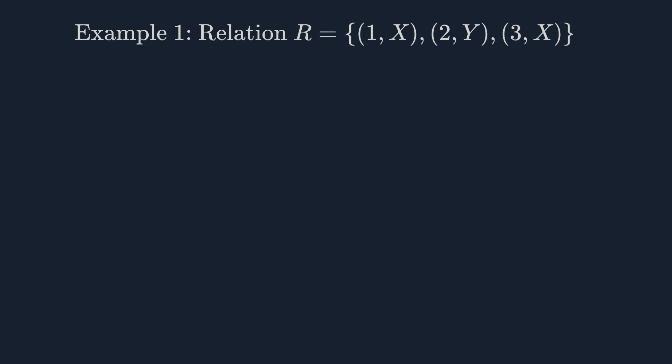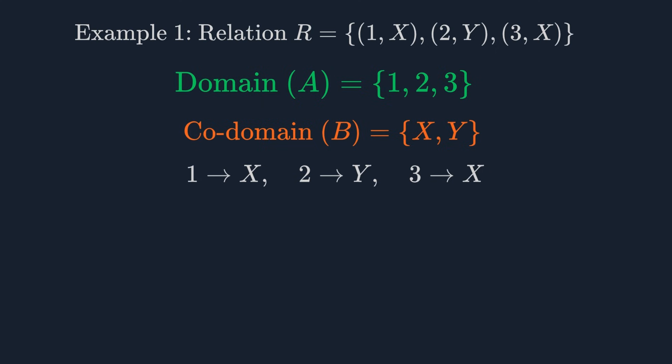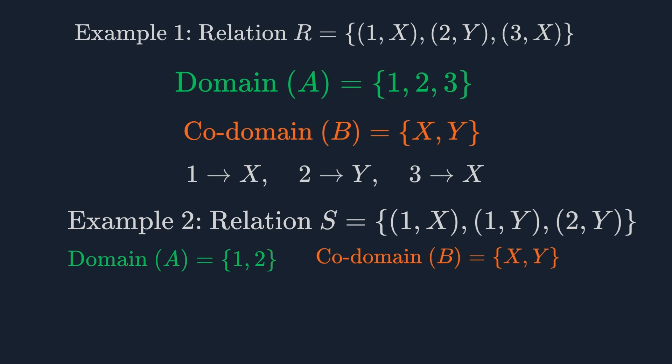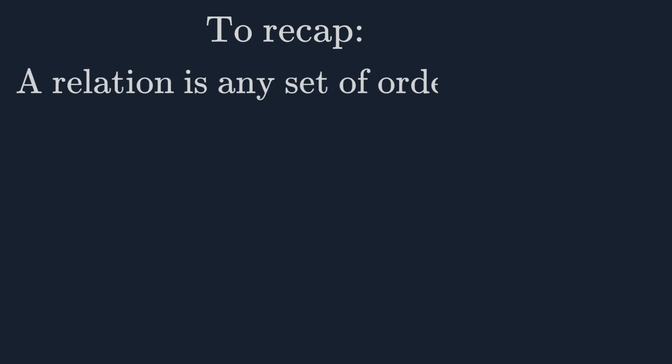Now let's consider another relation: S = {(1, x), (1, y), (2, y)}. Is this a function? No. The element 1 in the domain is paired with two different elements in the codomain: x and y. This violates the second condition for a function. So to recap: a relation is any set of ordered pairs. A function is a special type of relation where every input has exactly one output. This concept of a unique output for every input is fundamental in all of mathematics and computer science.